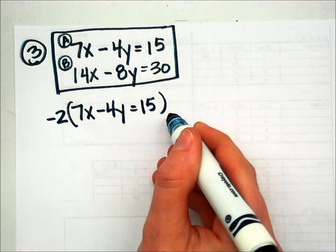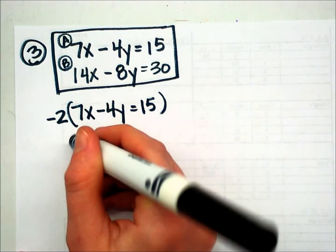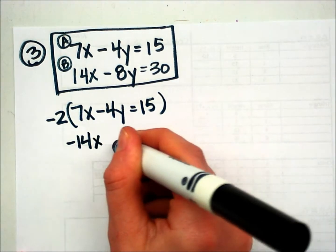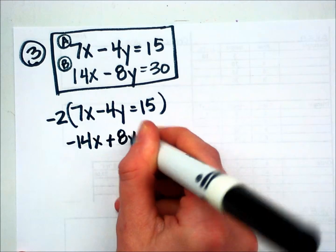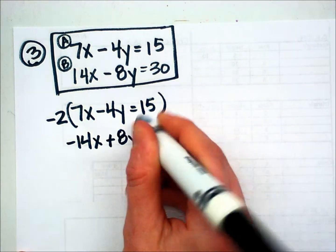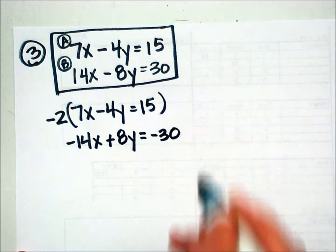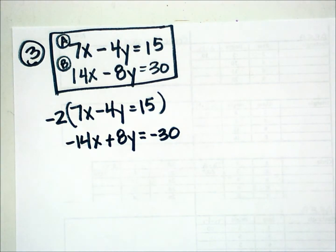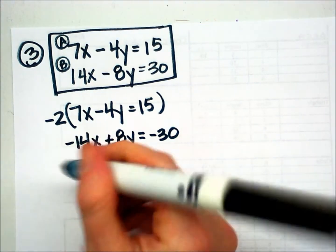I'm going to multiply equation A by negative 2. So that becomes negative 14x plus 8y equals negative 30. That was the new version of equation A, which I am going to add to the original equation B. I didn't change equation B to begin with.